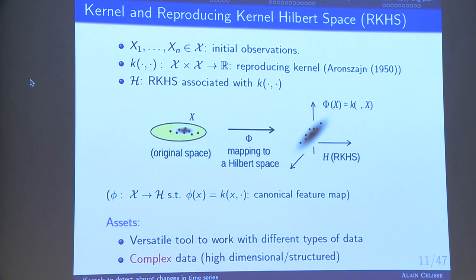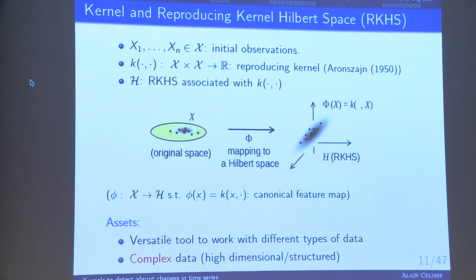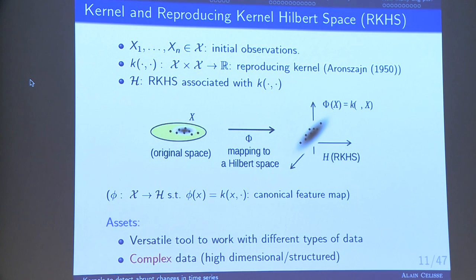The idea is simply to use this canonical feature map to map the observations from the initial space to the RKHS, where there is a vector structure that you can exploit. It is a versatile and convenient tool to deal with very different kinds of data. Our goal is to provide a unified analysis to deal with very different types of data by use of kernels.